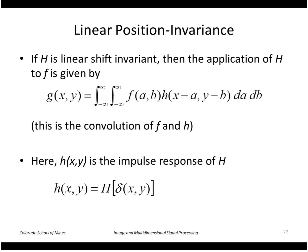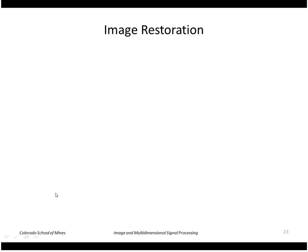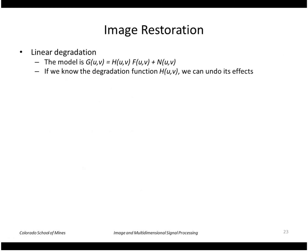If we apply the degradation function to a delta function — an impulse that is non-zero only at the origin — we get back the filter itself. In the Fourier domain we can write this as just a multiplication. So if we know the degradation function, we can hopefully undo it.